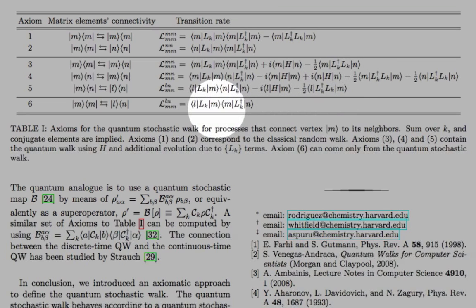Finally, there's a third rule, which is number six, that corresponds to jumping from one vertex to a superposition of its neighbors. This one has no analog in the classical random walk or the quantum walk. So this is a purely quantum stochastic walk process.